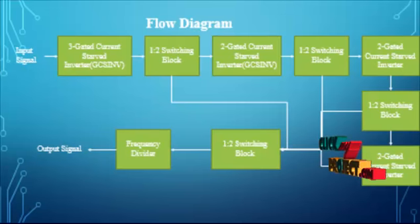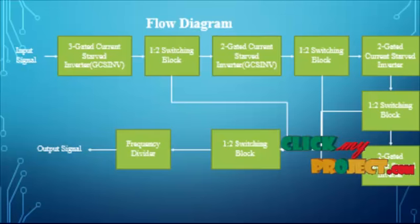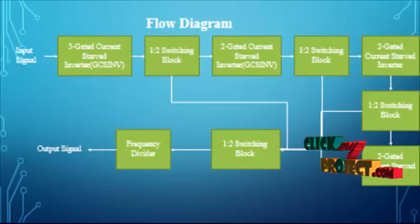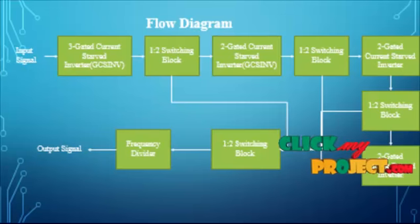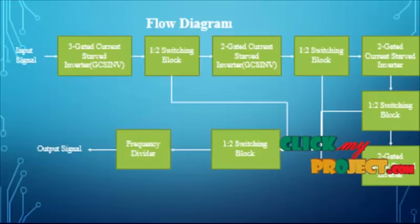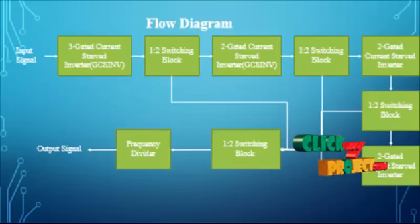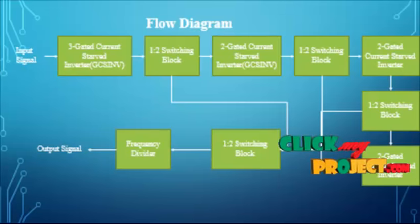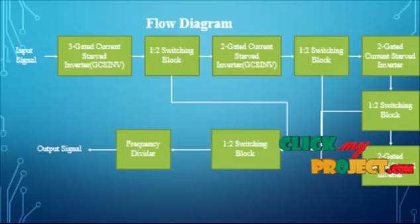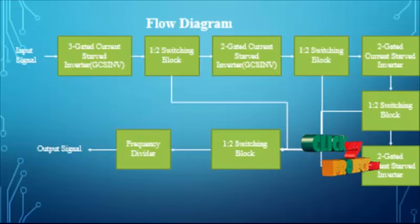The first module is gate current starved inverters, denoted as GCSINV. Another block is a switching block, which contains a one-to-two switching block and a one-to-seven switching block. The last module is a frequency divider module, used to obtain the desired output frequency in the ring oscillator.